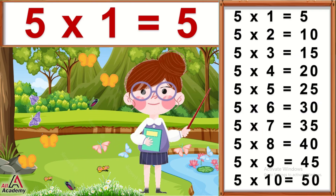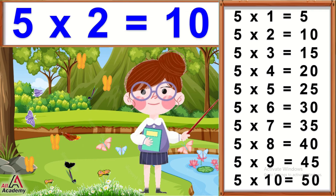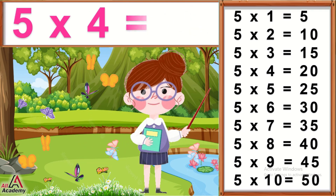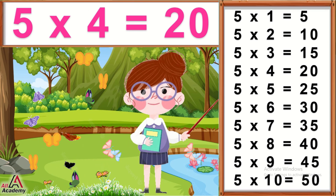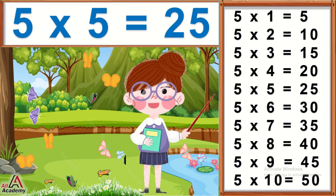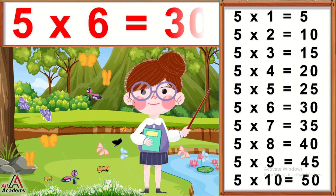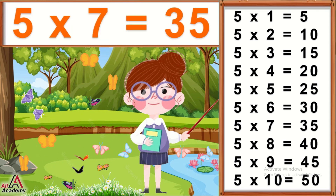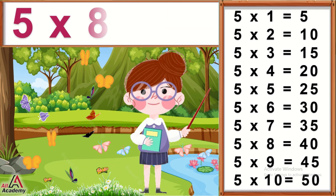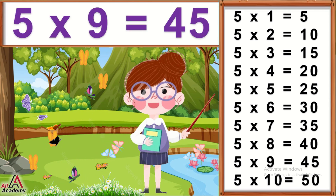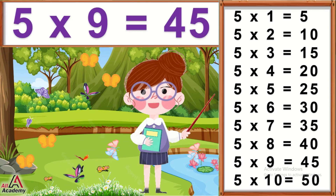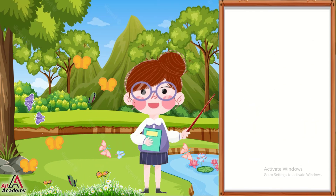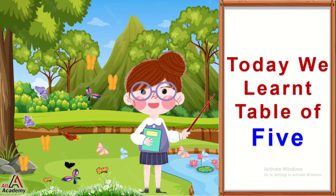5×1=5, 5×2=10, 5×3=15, 5×4=20, 5×5=25, 5×6=30, 5×7=35, 5×8=40, 5×9=45, 5×10=50. Today we learned the table of 5.